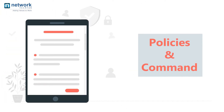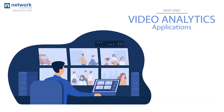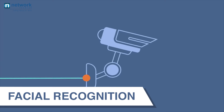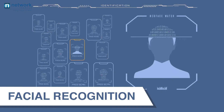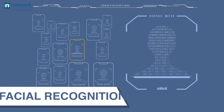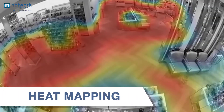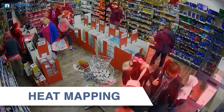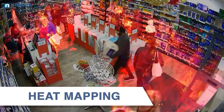Video analytics works based on the policies and commands written in the software. Here are some of the most used video analytics applications. Number one is facial recognition, which can be used in malls, shopping plazas, and casinos to recognize shoplifters and identify cheaters. Second is heat mapping, which enables the measurement of motion in an image and recolors that image to determine motion in a particular area.